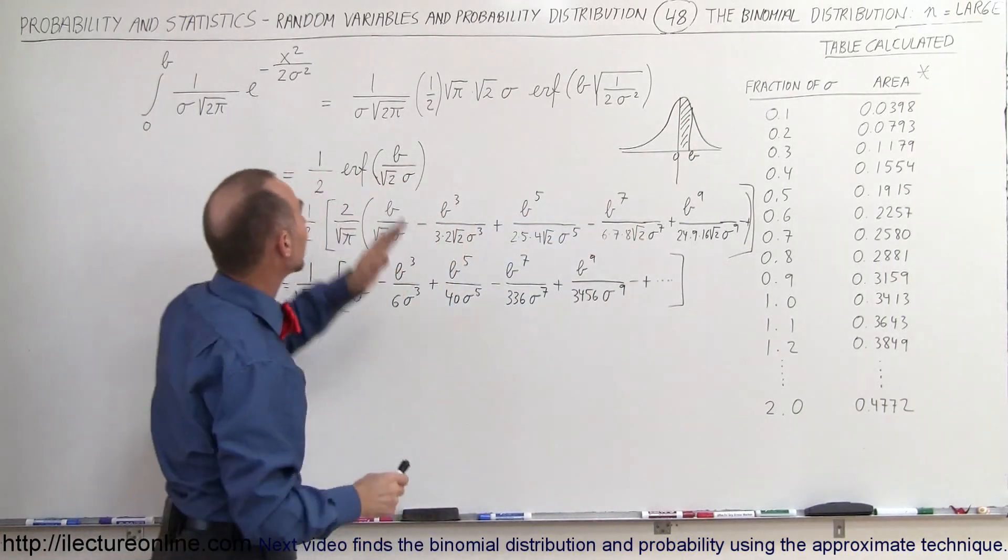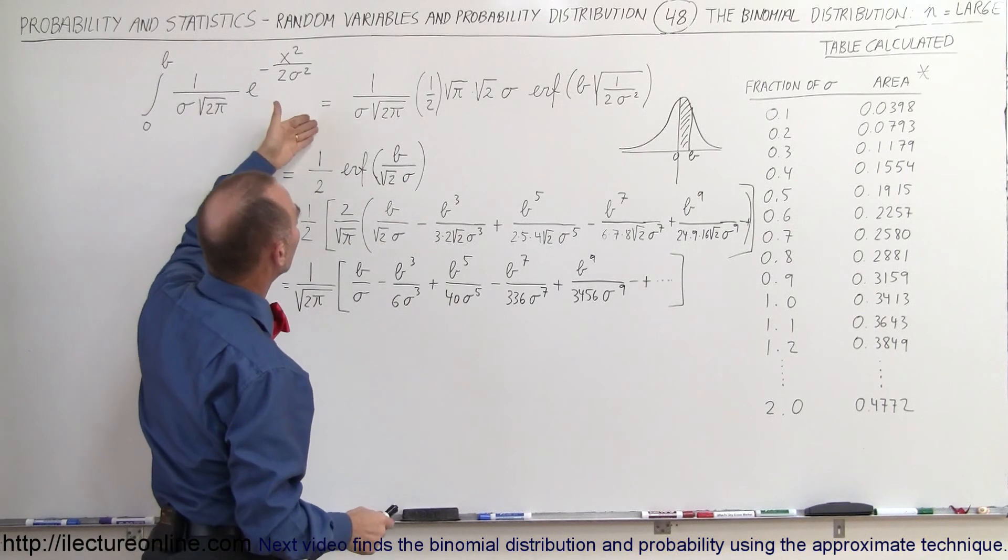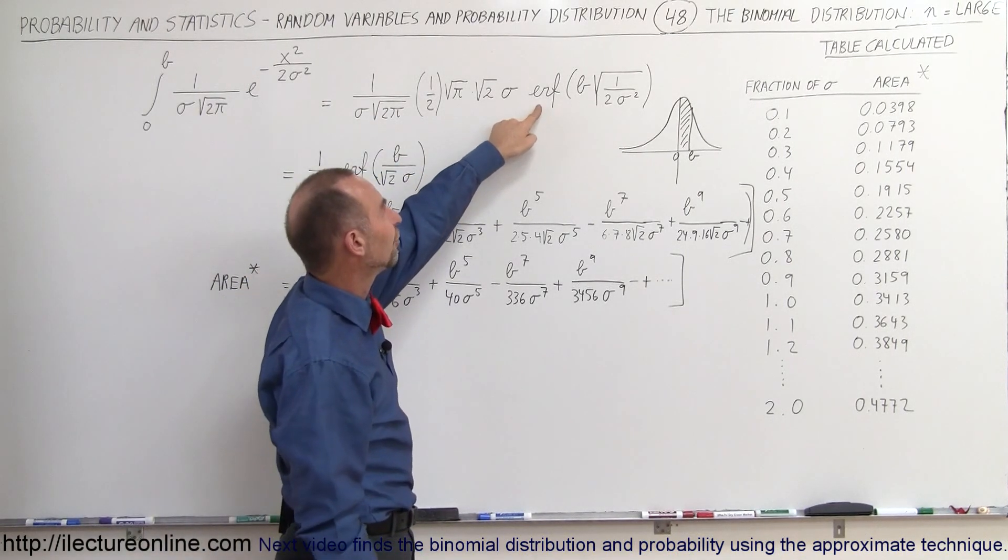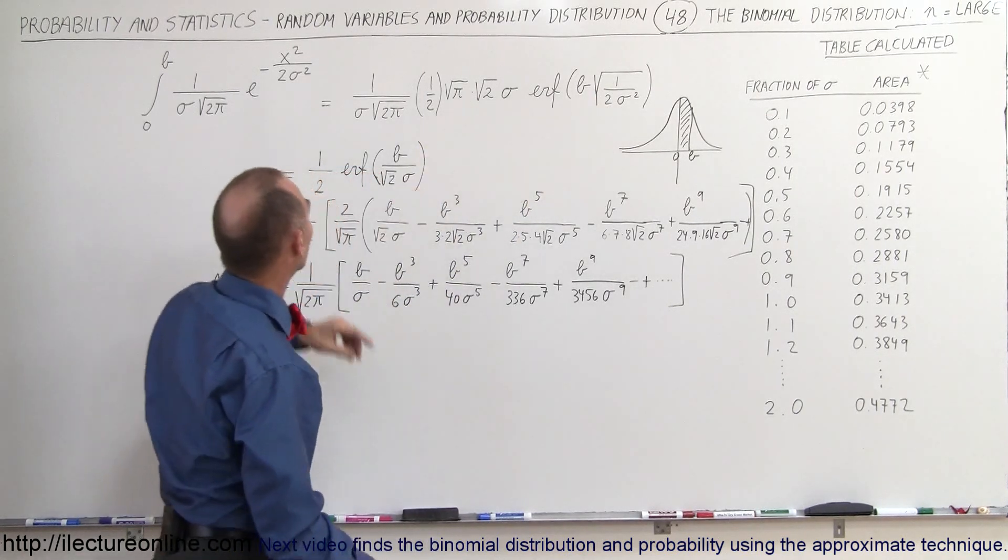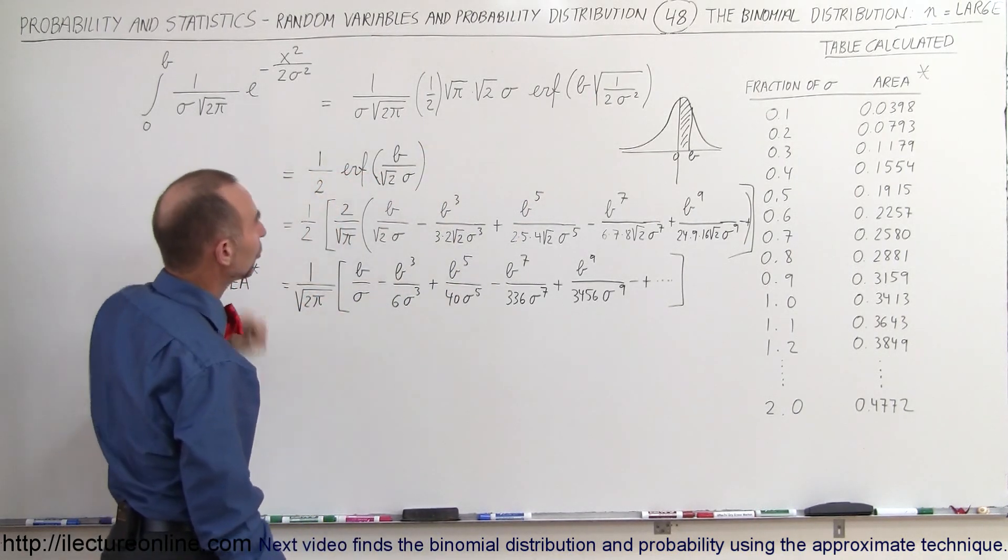When we integrate this equation, the solution is equal to this where we have what we call the error function of B times the square root of the coefficient, which is two sigma squared.